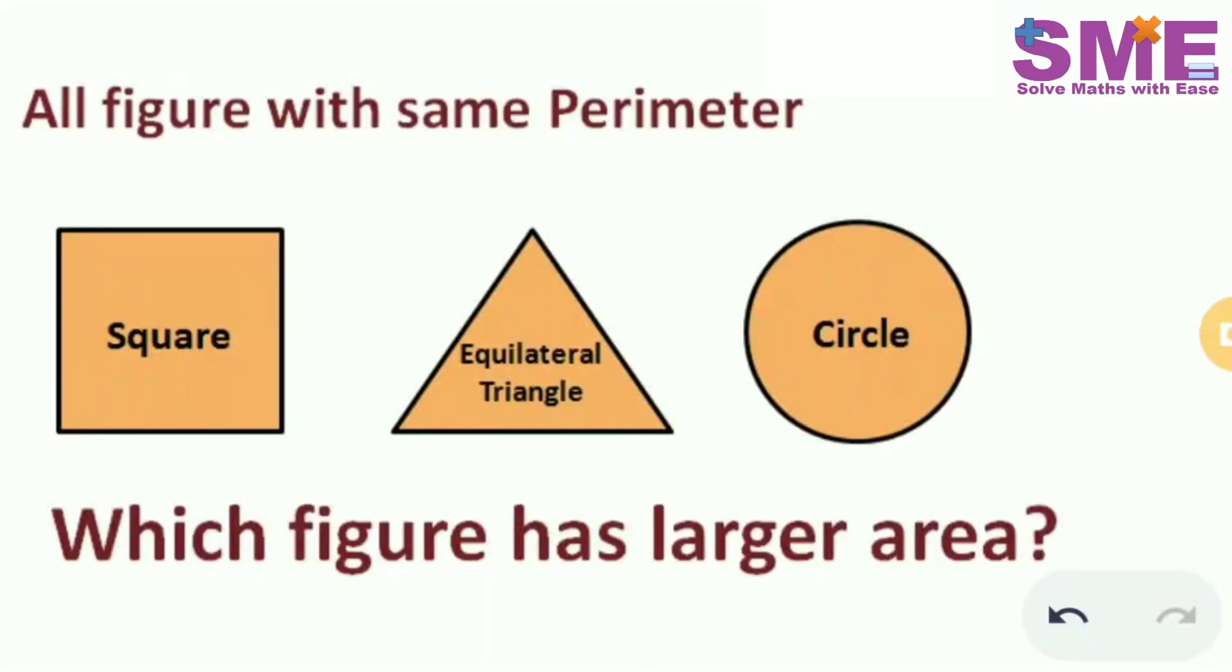Welcome friends to my channel Solved Maths with Ease. In the given problem we have three figures: a square, an equilateral triangle, and a circle. All these three figures have the same perimeter and we need to figure out which figure has the larger area.